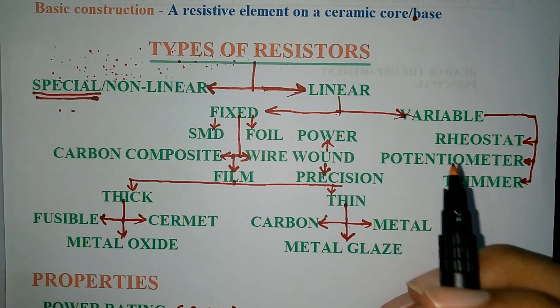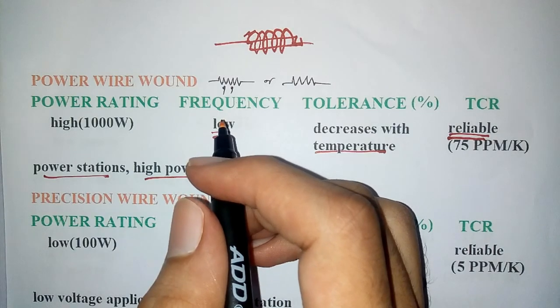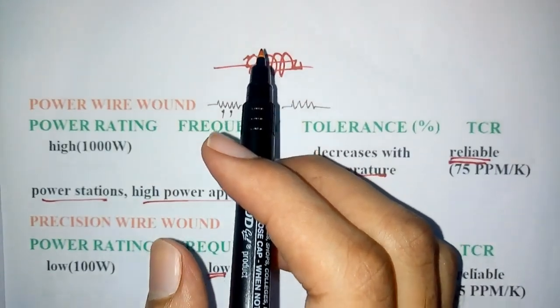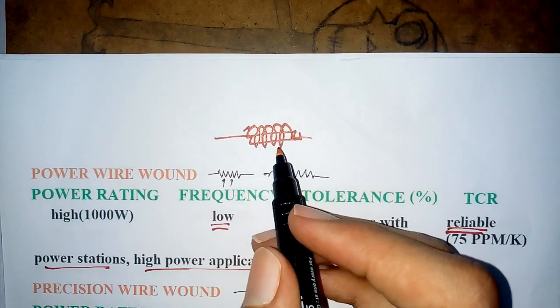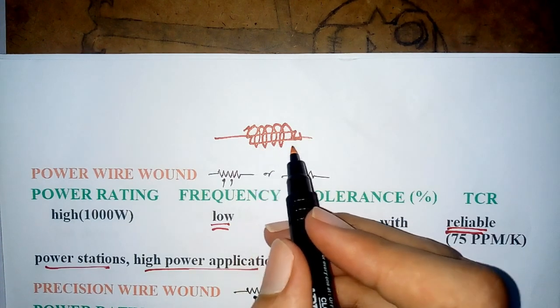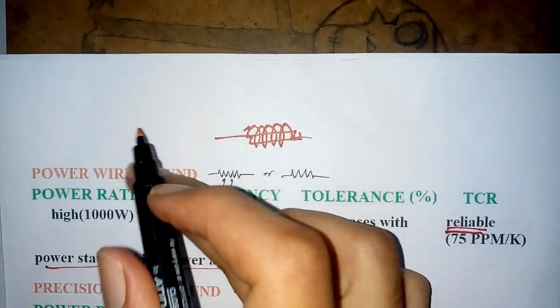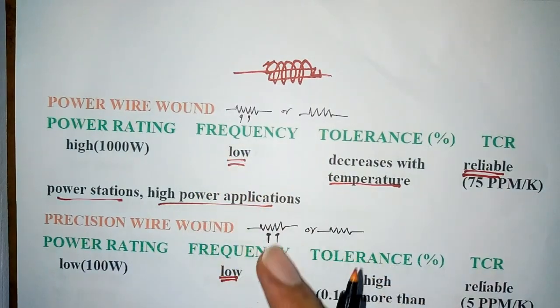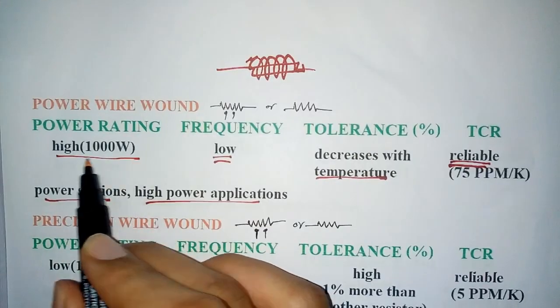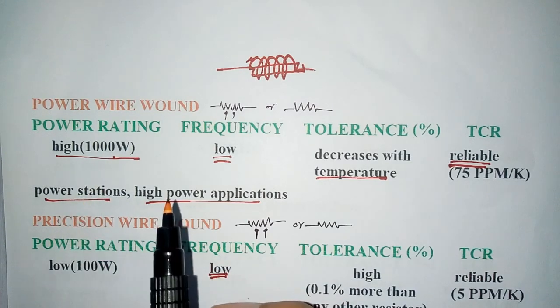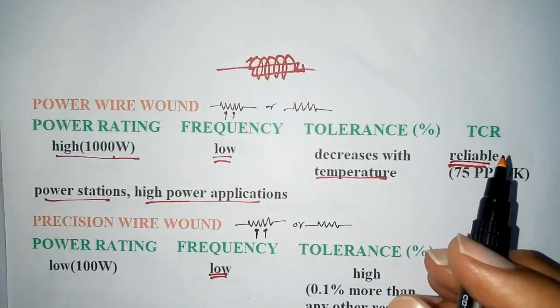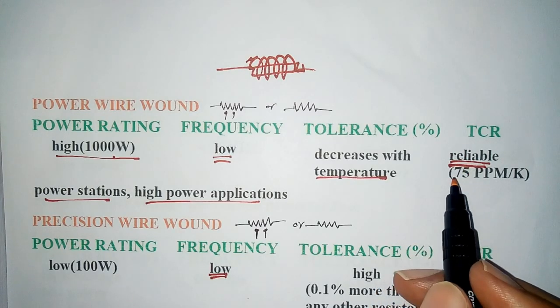Let's have a look at the properties of each type of resistor. Let's begin with fixed resistors. These are types of wire wound resistors. Their construction is a wire wound on ceramic base. Wire wound resistors act as a resistive element, but if observed, also act as an inductor. These type of resistors are generally preferred for low frequency of operation. Power wire wound resistor is used for high power applications in power stations and high power applications. It has high tolerance but depends on temperature, and its TCR is reliable, about 75 ppm per Kelvin.